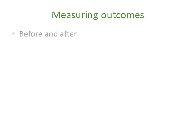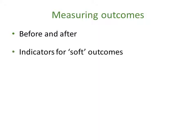A bit more detail on measuring outcomes: measuring both before and after is important. It might not be immediately obvious how to measure outcomes — for self-esteem, for example — but there are well-established ways of doing this. Is it possible to have a control group? The evaluation will be more convincing if you can. Do you want to know whether the intervention affects boys and girls in the same way?